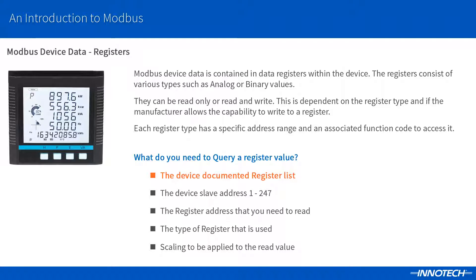Usually data read back from a Modbus device is provided as a basic value without any scaling applied. You then need to make the value a real world value by entering the correct scaling. This may be indicated in the documentation but sometimes you need to test and make an educated choice for the register that you are reading.